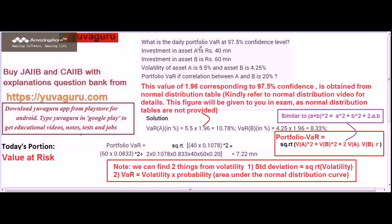Volatility of Asset A is 5.5%. What we mean by volatility is this much fluctuation is there. Then Asset B volatility is 4.25%. Now remember this part — what do you mean by volatility.